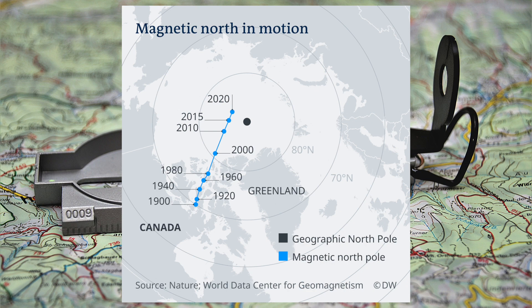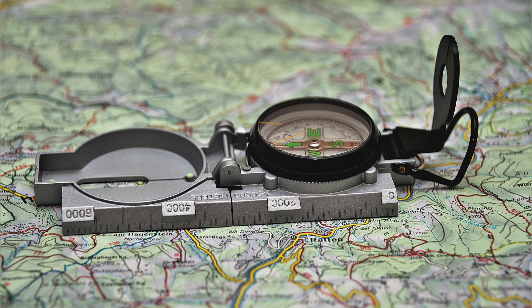Geographic North, which never changes, is the North displayed on maps, but it's not necessarily where your compass will point.